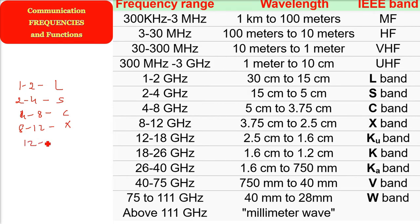And then 12 to 18 is your Ku band. Then we have 18 to 26, that is K band. Then 26 to 40, it's your Ka band. Then V and W, and then above 111 is millimeter wave.